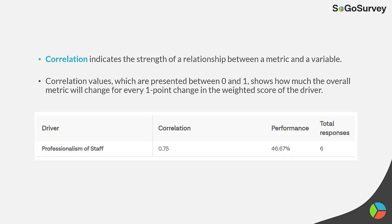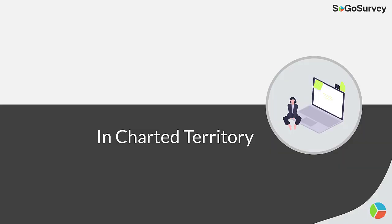Correlation indicates the strength of a relationship between a metric and a variable. Correlation values, presented between 0 and 1, show how much the overall metric will change for every 1-point change in the weighted score of the driver.